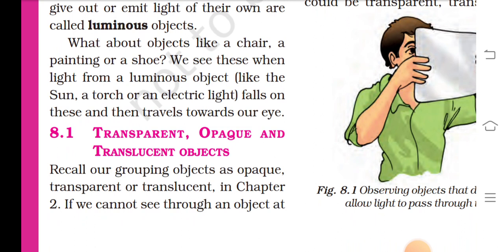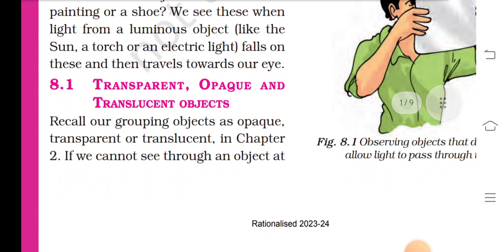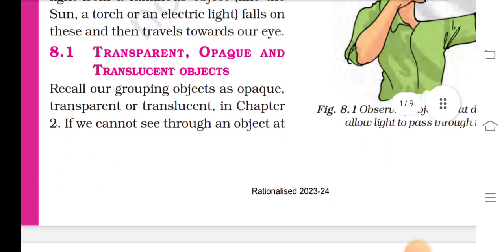Objects like the sun that give out or emit light of their own are called luminous objects. What about objects like a chair, paintings, or shoes? We see these when light from a luminous object like the sun, a torch, or an electric light falls on them and then travels towards our eyes.